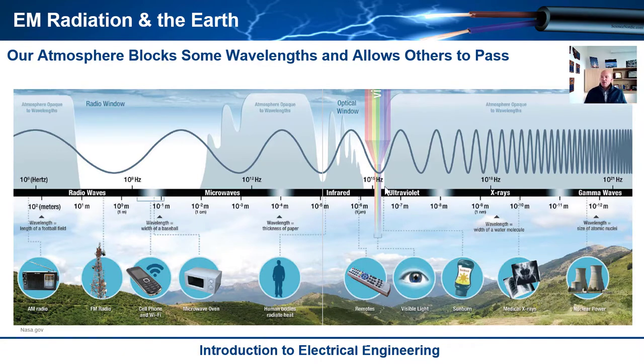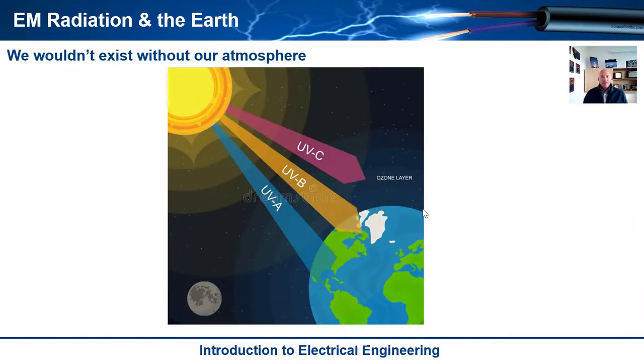Then we get to ultraviolet and you'll notice that ultraviolet, it blocks a whole lot of it. And then from there on out, the atmosphere blocks X-rays, it blocks gamma rays, and it blocks everything else. But the ultraviolet is kind of interesting because we think about getting burned from the sun, like a sunburn.